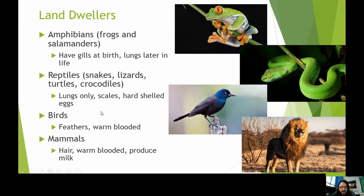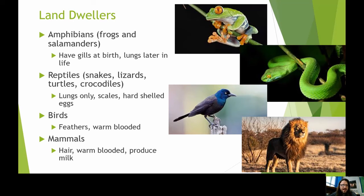Reptiles — snakes, lizards, turtles, and crocodiles — have lungs only, with no gills at any point in their life cycle. They possess scales and harder, leathery egg shells that protect against dryness. Scales protect their skin, and the egg shells protect eggs from drying out. So reptiles are like amphibians that have completely left the water, and we can find reptiles in almost every ecosystem and habitat on Earth.